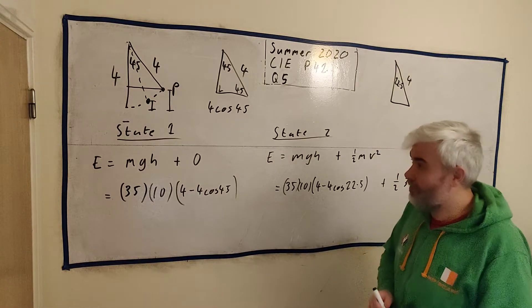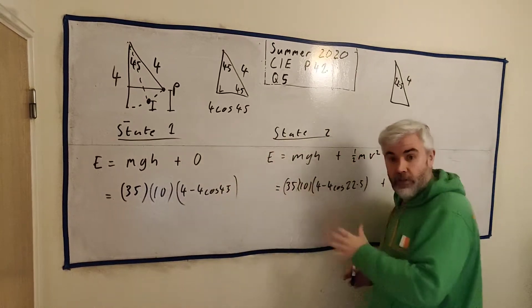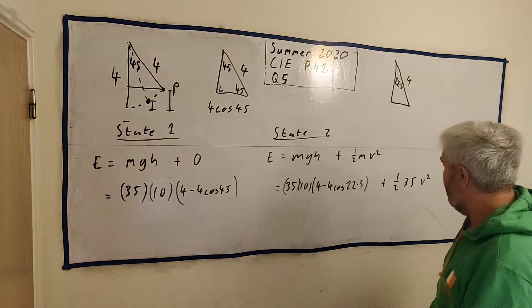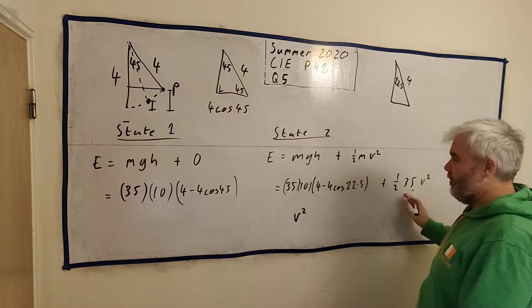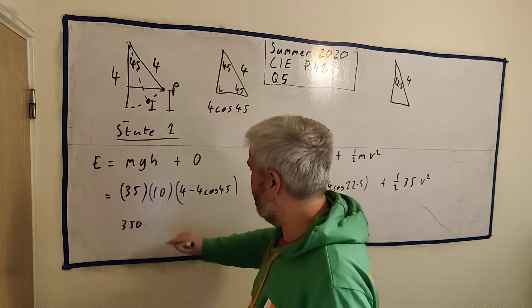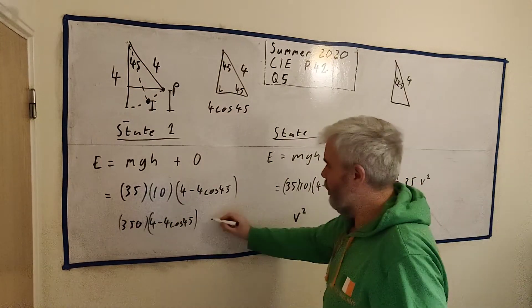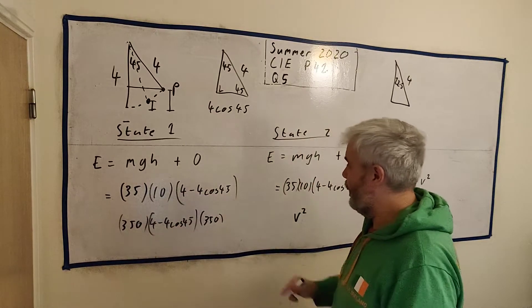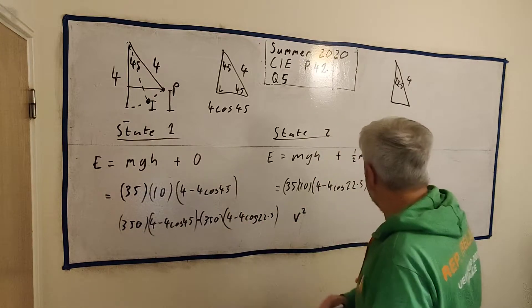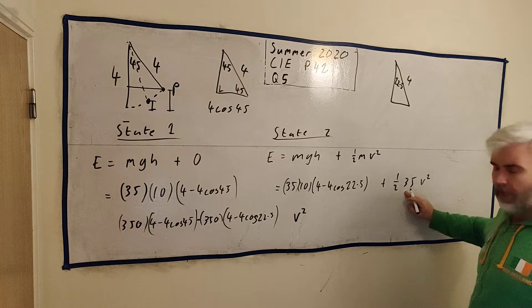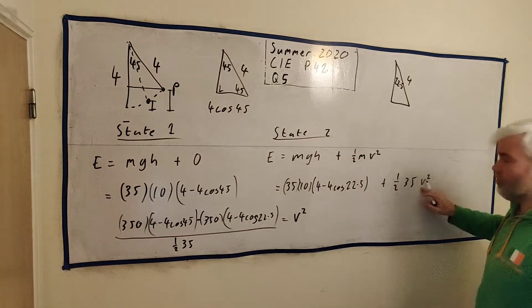Okay, they told us that there's no resistance force. That means there's nowhere else energy could have come from or gone from except these two things. So going from this state to this state, they should have the same energy. So that means this should equal this. I had the equals there. So all we need to do is really rearrange this so V squared is on its own. I think we can do that. You might want to do this a bit neater. We would just get this number, 350 we'll say. Multiply by 4 minus 4 cosine 45. You can put this in a calculator any time you want really.